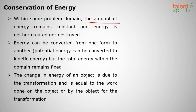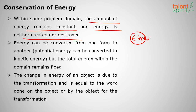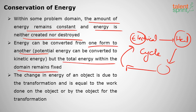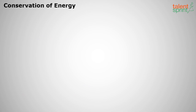Conservation of energy states that the total amount of energy remains constant — energy is neither created nor destroyed. When electrical energy converts to heat energy, it eventually converts into another form — it is always a cycle. The change in energy of an object equals the work done on or by the object during that transformation.